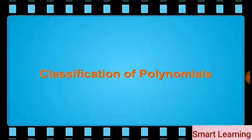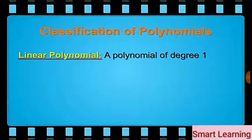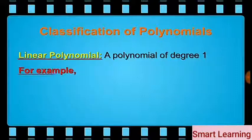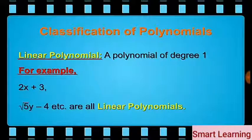Let us now classify the polynomials on the basis of degrees. First in the order, we have linear polynomials. A polynomial of degree 1 is called a linear polynomial. For example, 2x plus 3, square root of 5y minus 4, etc. are all linear polynomials.